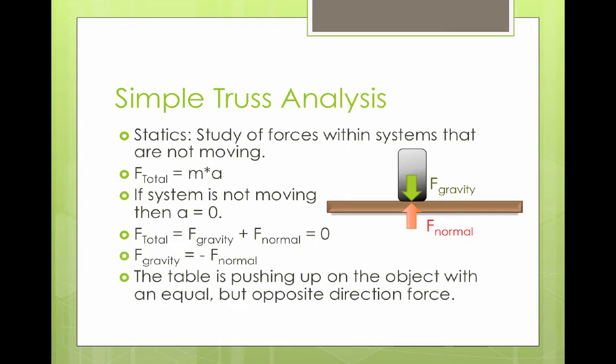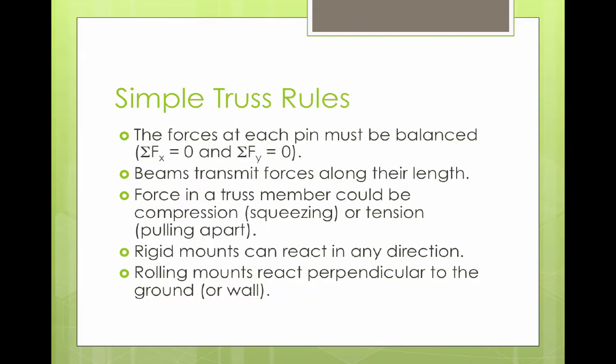Here are our rules for truss analysis that are a result of our assumptions. The forces at each pin have to be balanced. This means that the sum of the forces in the x direction have to equal zero, and the sum of the y direction have to equal zero. The sigma sign means that we are adding up all of those x forces and all of the y forces, and each of those sums have to equal zero.